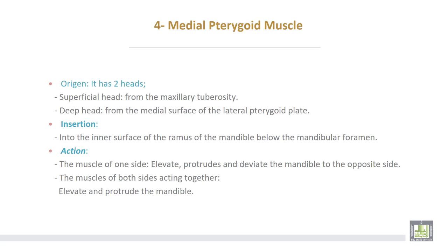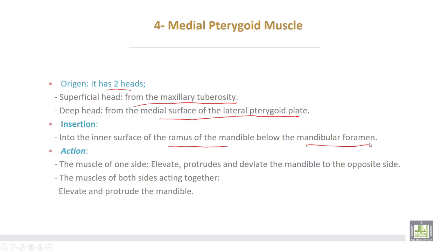The medial pterygoid muscle also has two heads: a superficial head and a deep head. The superficial head takes origin from the maxillary tuberosity, while the deep head arises from the medial surface of the lateral pterygoid plate. Insertion is into the inner surface of the ramus of the mandible, just below the mandibular foramen. If acting on one side, it elevates, protrudes, and deviates the mandible to the opposite side.